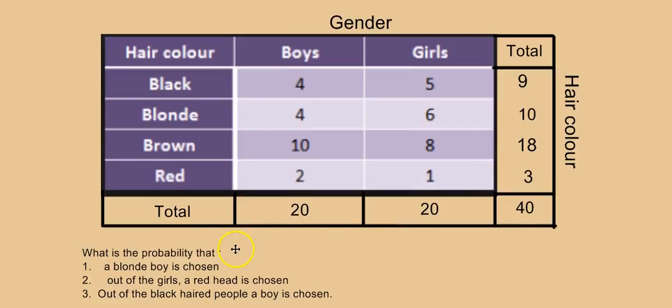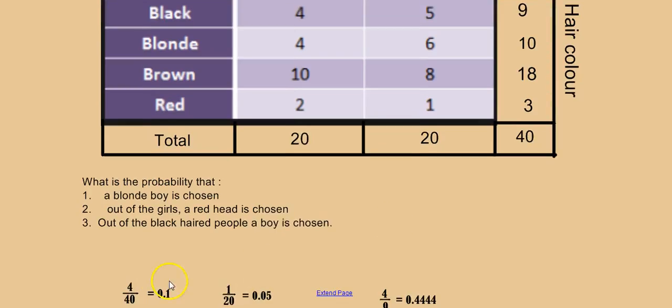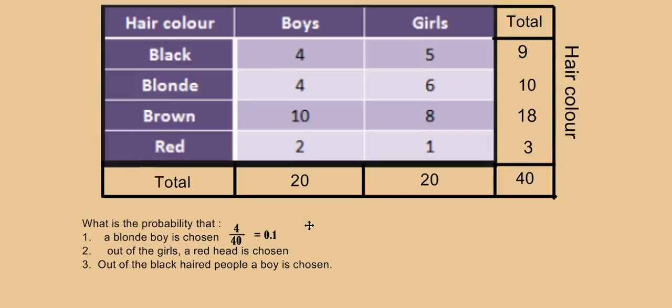Let's look at the kinds of questions we could be asked. First: what is the probability that a blonde boy is chosen? The key difficulty is determining whether we're talking about the whole population surveyed or just a subset. This question doesn't specify, so we assume the whole population. There are four blonde boys out of 40 people surveyed, giving 4 out of 40, which simplifies to 1 over 10, or 0.1.